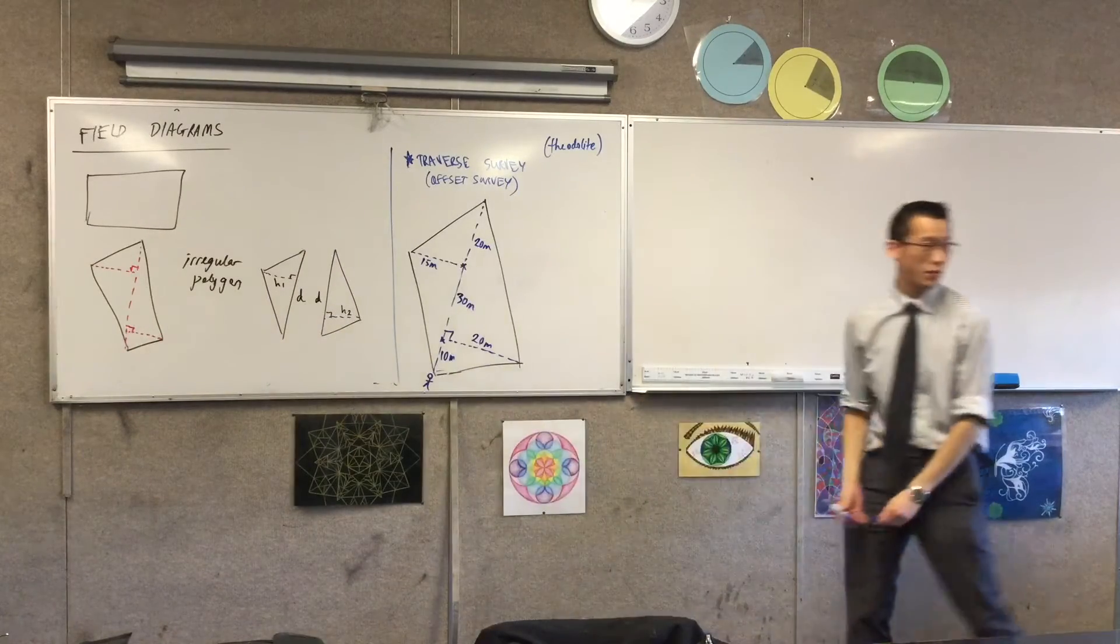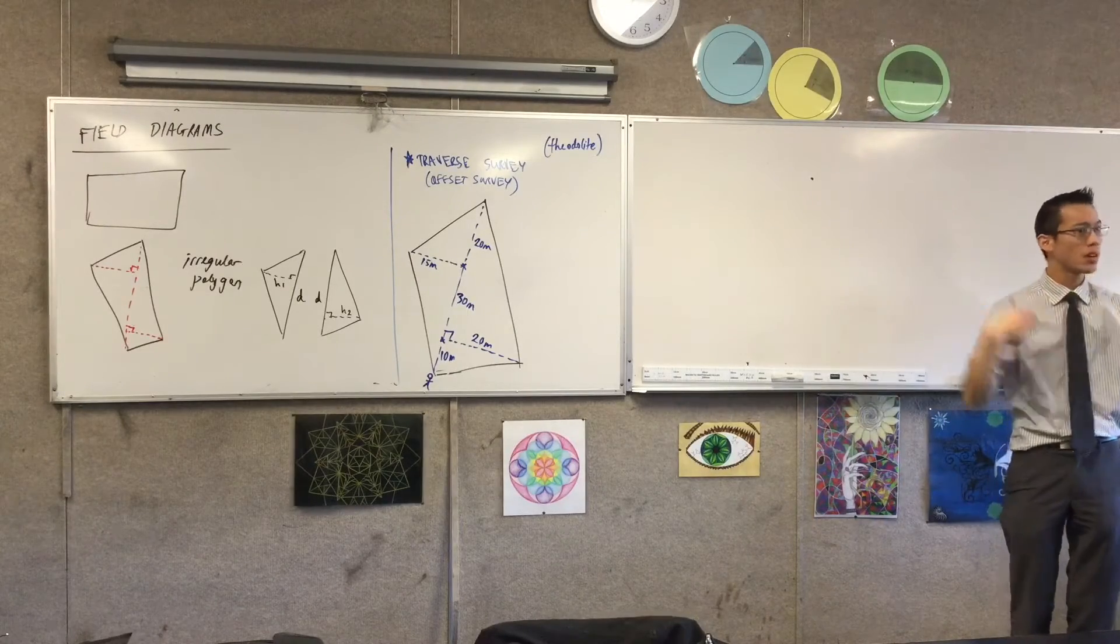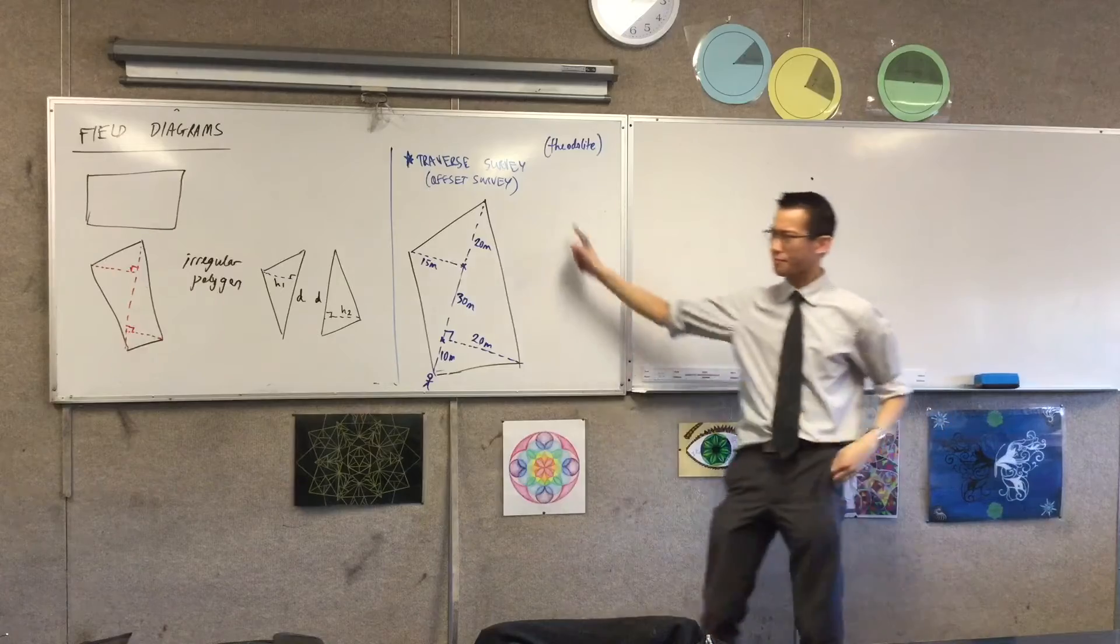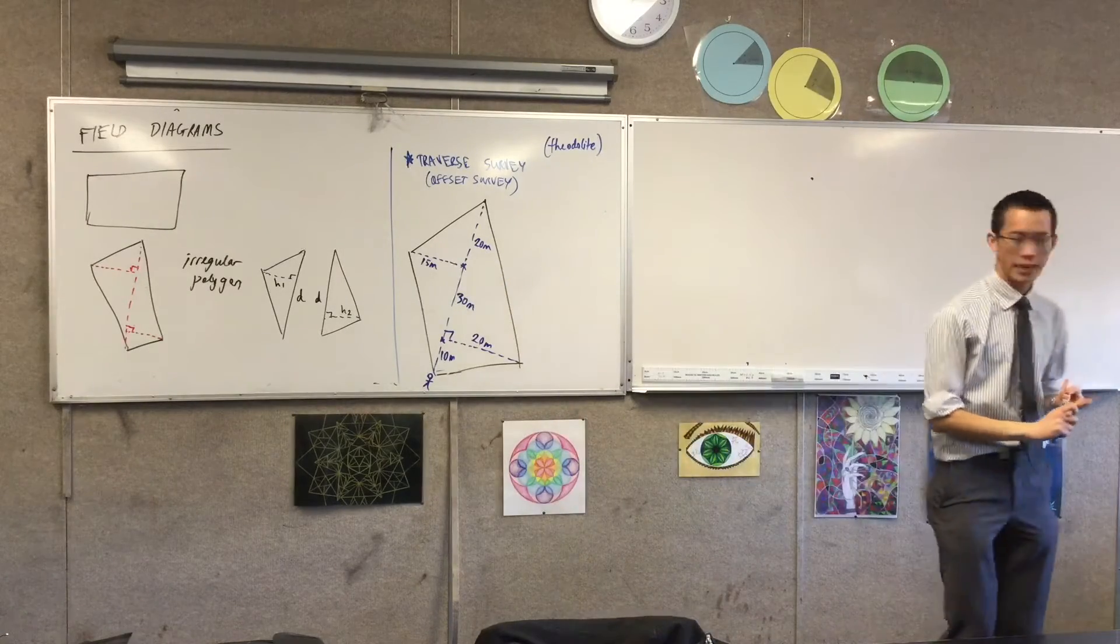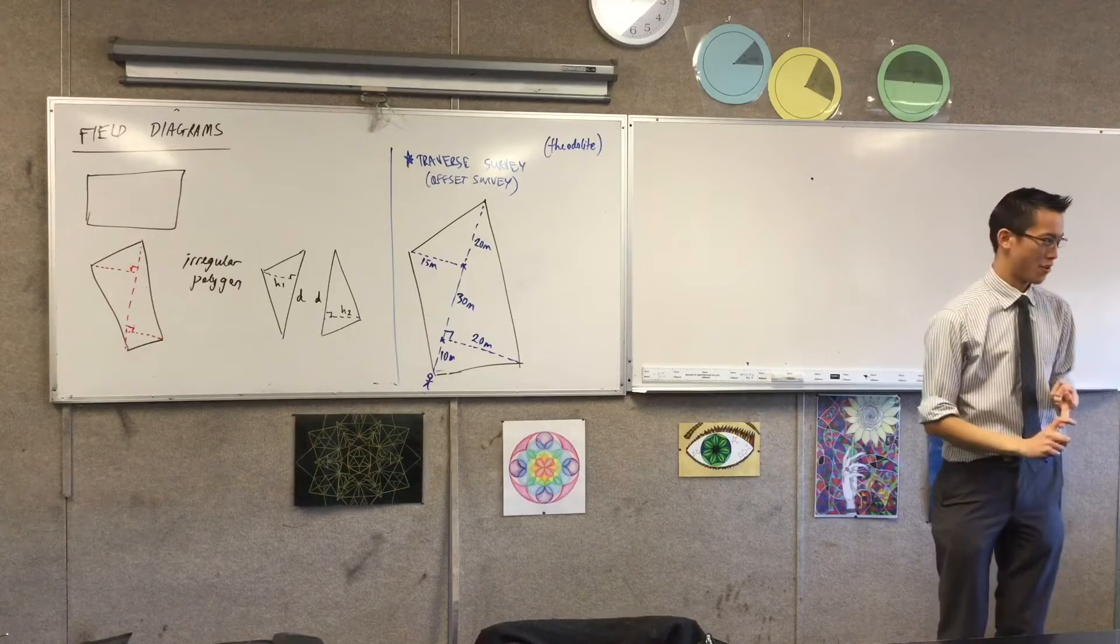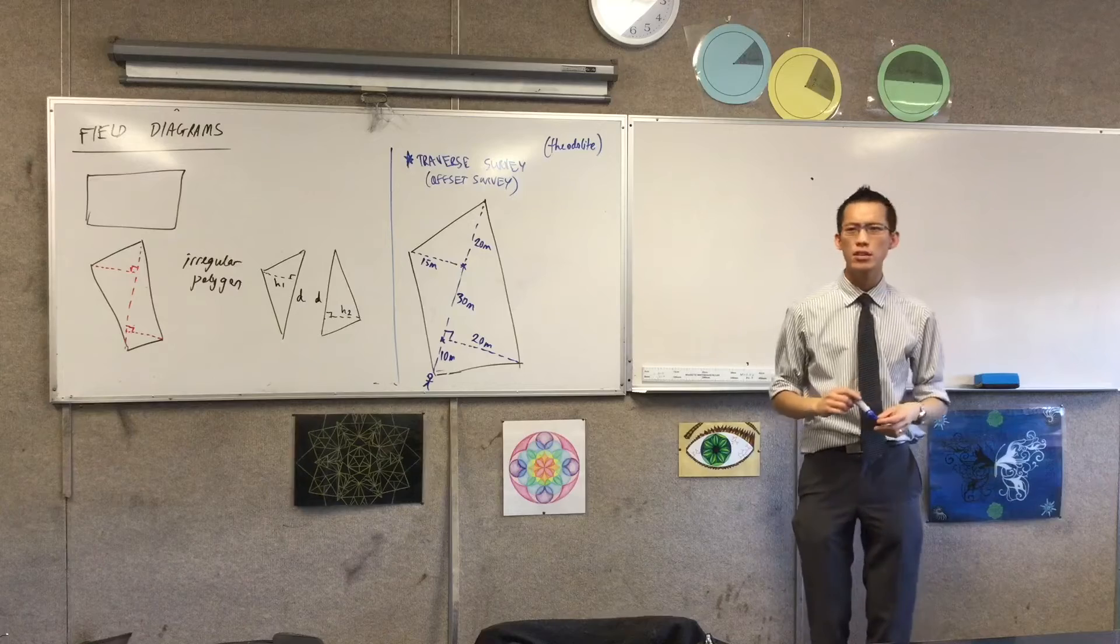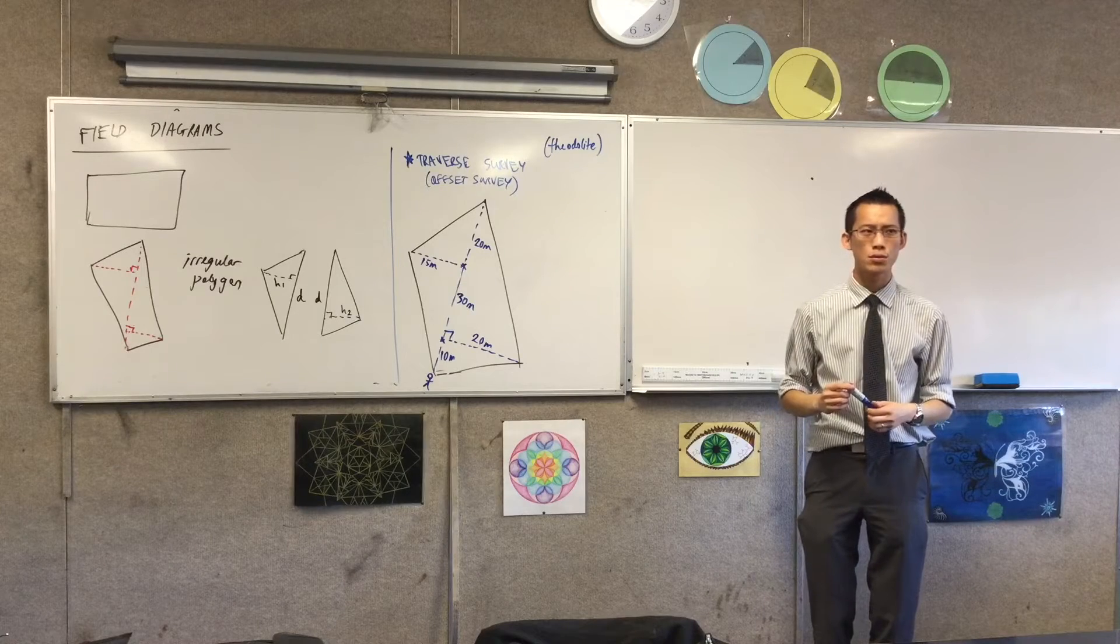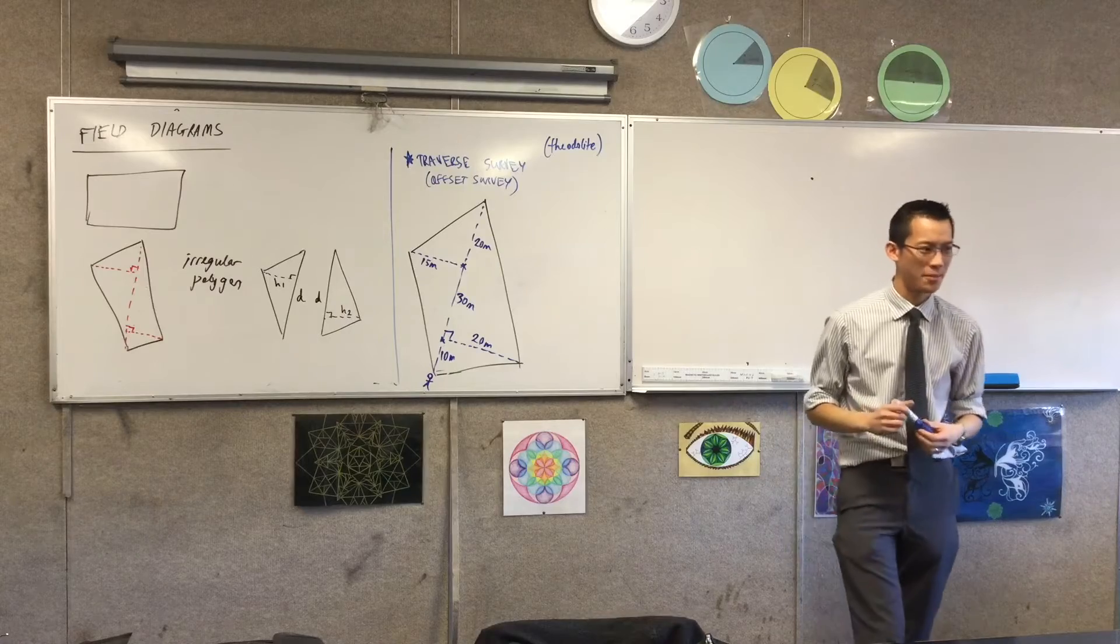Now once you've got all of those measurements, the important thing is we're going to get out there and do the measurements. We'll come back here and we'll work out how are we going to crunch these numbers to get perimeter and get area. So we're going to get out there. I'm going to put you probably in groups of three. Is everyone here today? Because that would be eight groups.